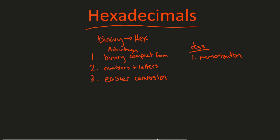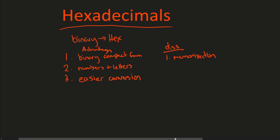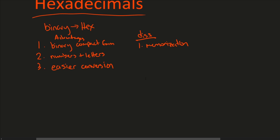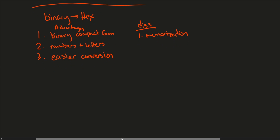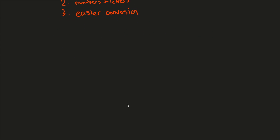Let's make some room here for our chart, because this will be about the most important thing you can learn for hexadecimal usage. We'll draw out a simple diagram — on one side I'll put some binary, and on the other side I'll put the hex equivalent of that binary. So we first need to understand something about how hex works.